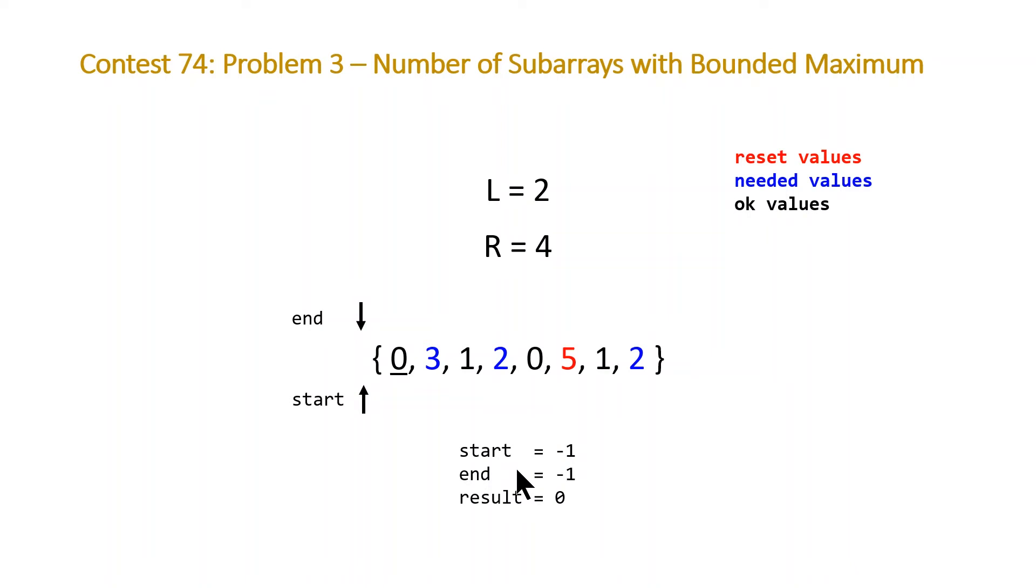Because we're not doing anything for the okay value, we're just going to be adding negative 1 minus negative 1, which is just 0. Then we'll move to 3. For needed values, we're always going to reset end to the current index, which is 1 at the moment. We add end minus start, which is going to be 2 at this point. That keeps track of the two subarrays that are 0, 3 and 3.